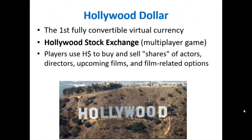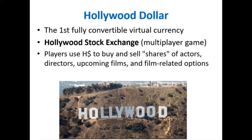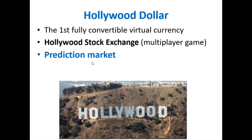Max Kaiser invented the Hollywood Dollar — the first fully convertible virtual currency, which could be exchanged to and from the US dollar. It was used in the computer game Hollywood Stock Exchange, a multiplayer game like fantasy football where you can buy shares of actors, directors, upcoming films, and film-related options. It was essentially a prediction market.